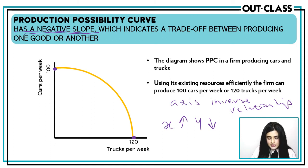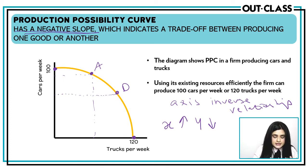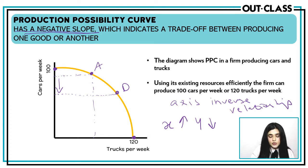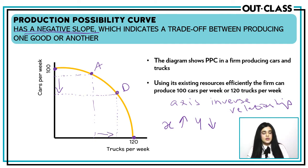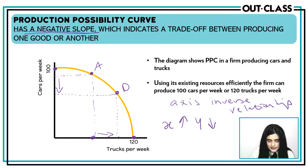If I plot two points — point A and point B — then moving from point A to point B shows that I am now producing fewer cars, as indicated by the fall on the y-axis, while I am now making more trucks. Because I decided to make fewer cars when moving from A to B, I am able to make more trucks, since the truck value at point B is greater than at point A.